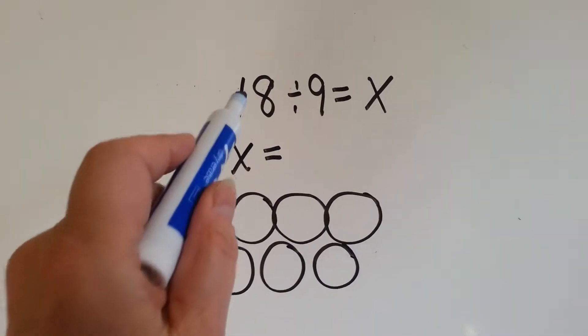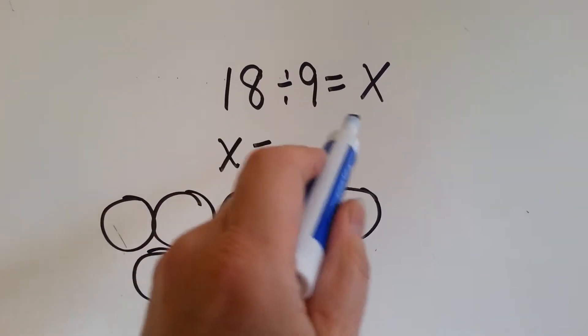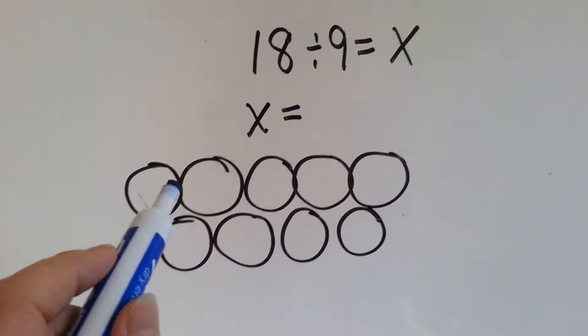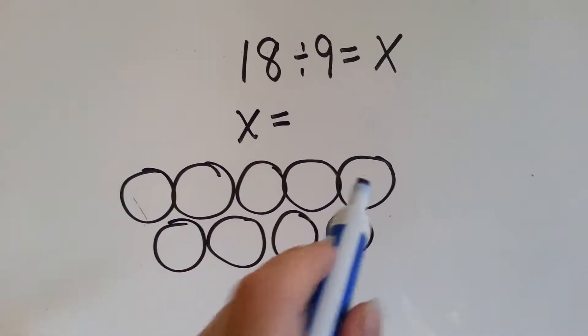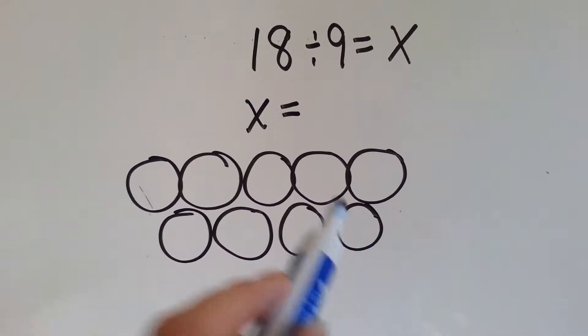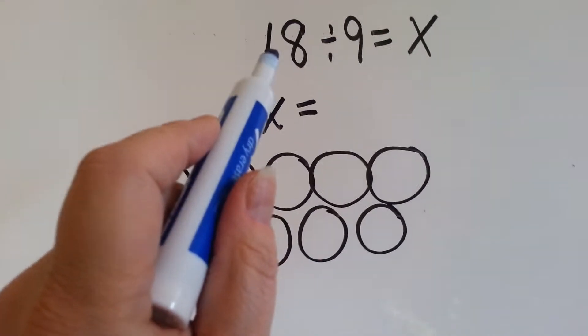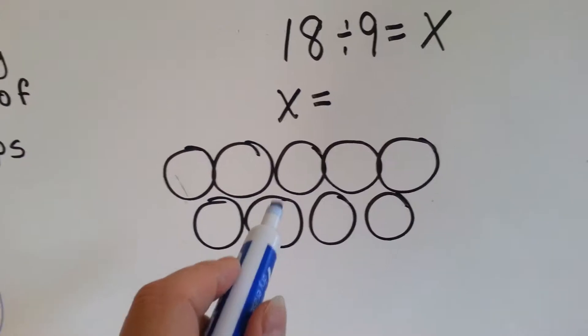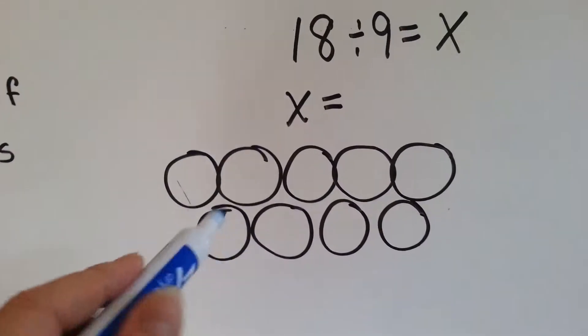Now we've got this one. 18 divided by 9 equals X. X equals what? So we've got 1, 2, 3, 4, 5, 6, 7, 8, 9 groups. We're going to count to 18 and take turns putting dots in the groups to find out how many dots will end up in the groups. Here we go.